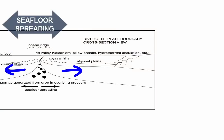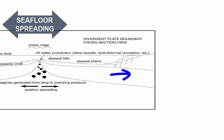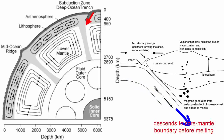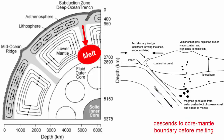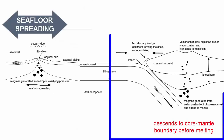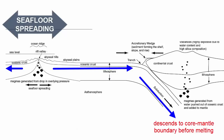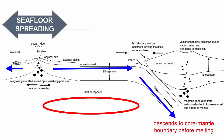Eventually the ocean lithosphere becomes so dense that it is denser than the rock underneath it. It detaches and sinks back into the mantle, possibly subducting as deep as the core-mantle boundary before finally melting and becoming reabsorbed back into the mantle. This dense, cold lithosphere sinking down pulls the distant seafloor spreading center further apart, driving a recycling engine for mantle material.